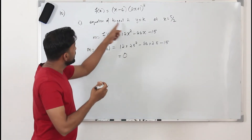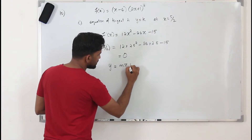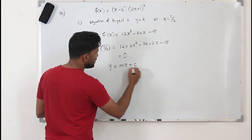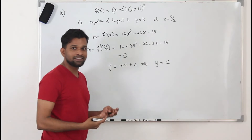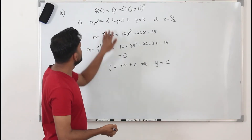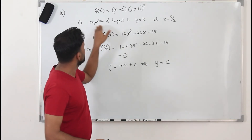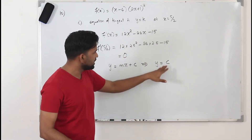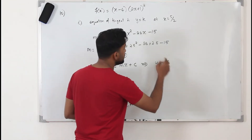The equation of the tangent is y equals mx plus c. Since our slope is 0, the mx term becomes 0. So the equation is y equals c, which is a constant — and that is exactly what they want you to prove. The equation of the tangent is y equals k; just replace the constant c with k.